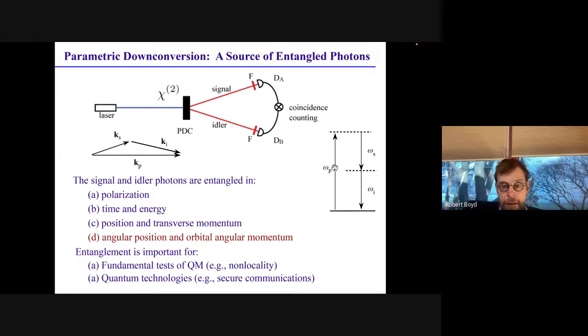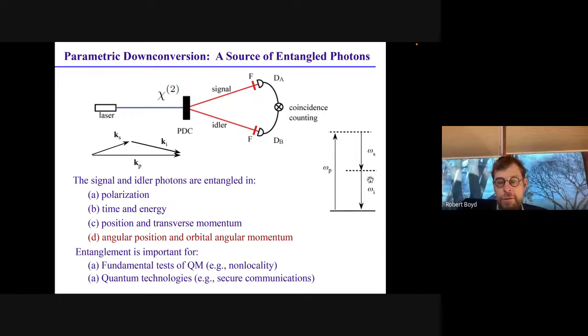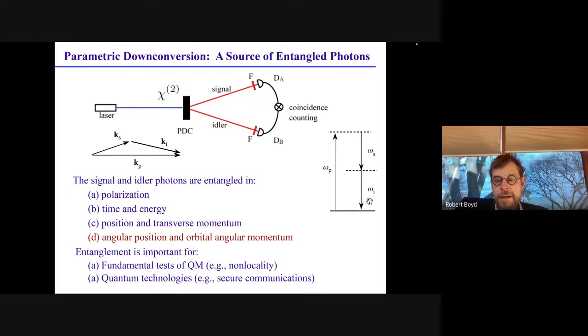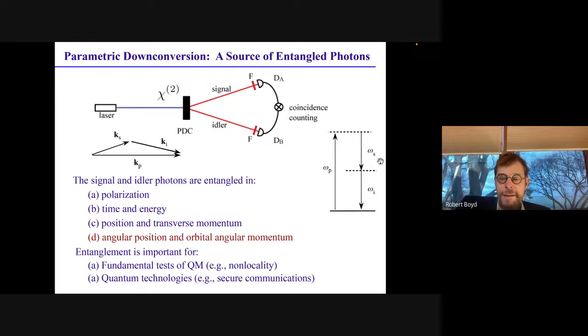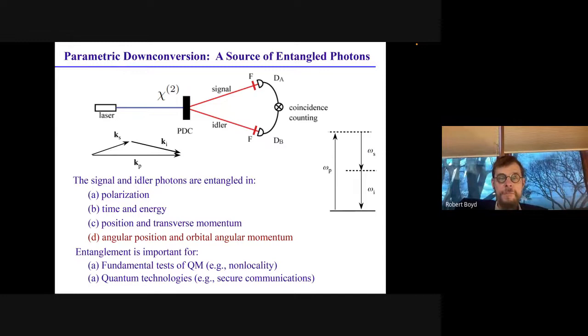Now, this signal and idler photons are said to be entangled. In the most general case, they are entangled in many different degrees of freedom: polarization, time and energy, position and transverse momentum, angular position and orbital angular momentum. If we measure the energy of the idler photon, we can immediately predict the energy of the signal photon. But if we measure the exact time at which the idler photon is emitted, we find that the signal photon is emitted at exactly the same moment. However, we can no longer measure the exact energy of the signal photon. So something that we do with one photon seems to dictate what can happen to the other photon. Many people call this quantum weirdness.